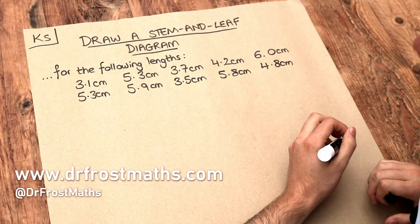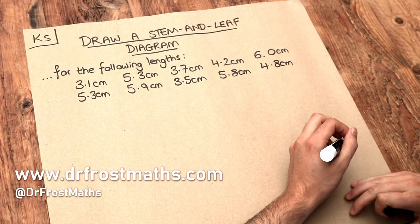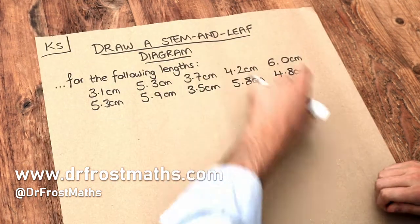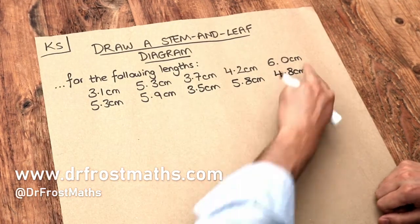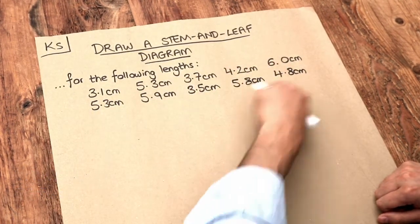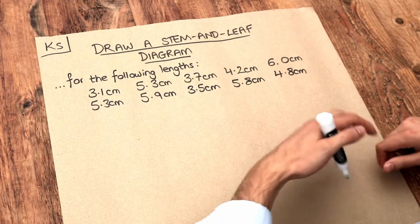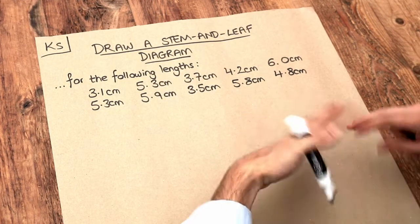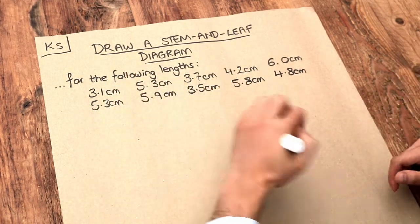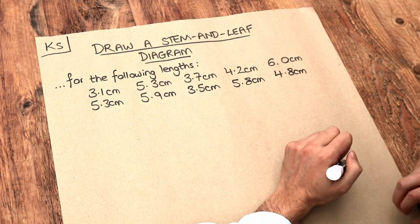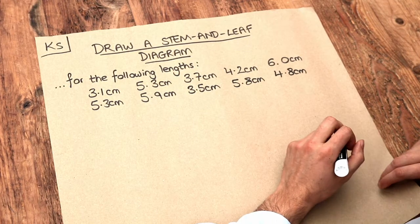Hello and welcome to Dr Ross Math's key skill video on drawing a stem and leaf diagram. The good thing about a stem and leaf diagram is it preserves all the values in your data, whereas other charts, for example histograms, only summarize your data — they don't preserve all the original values.